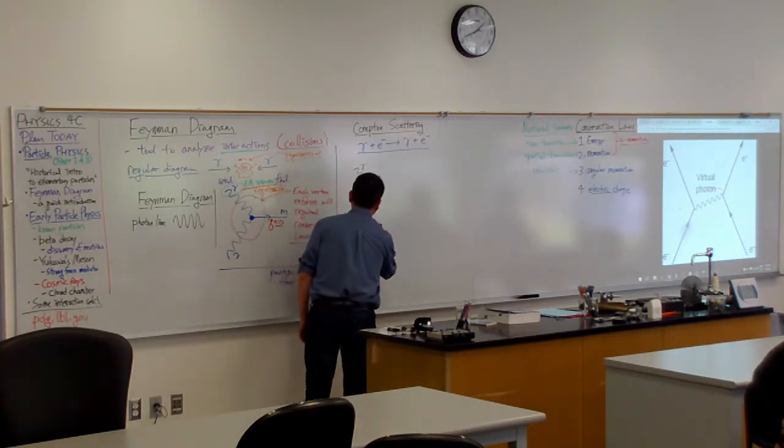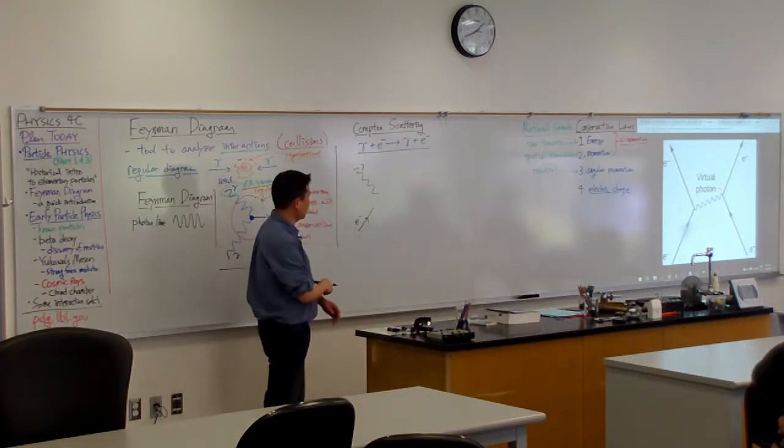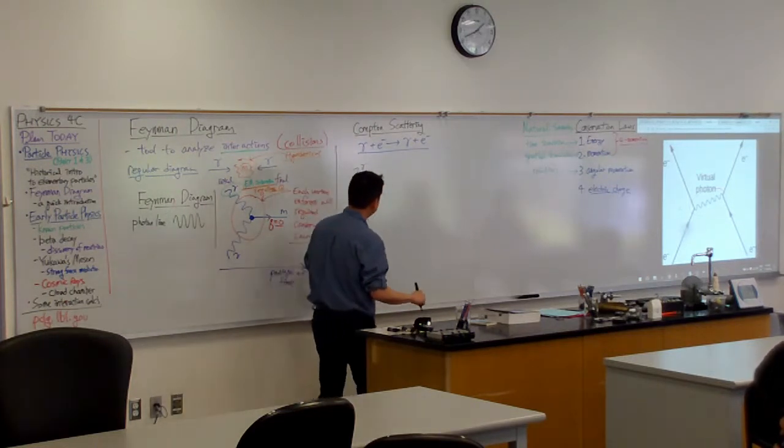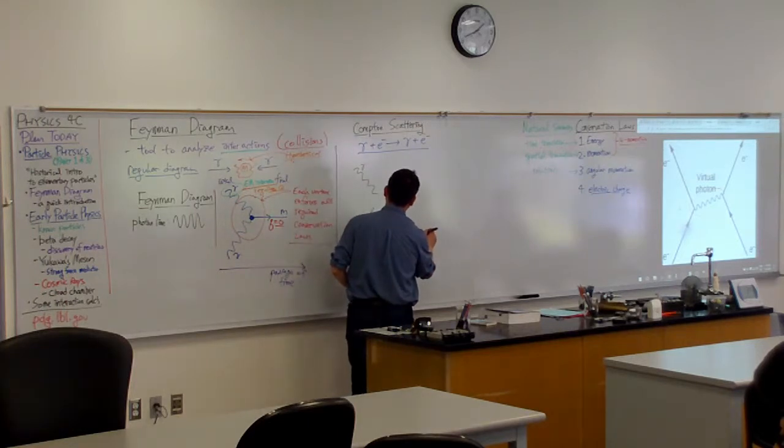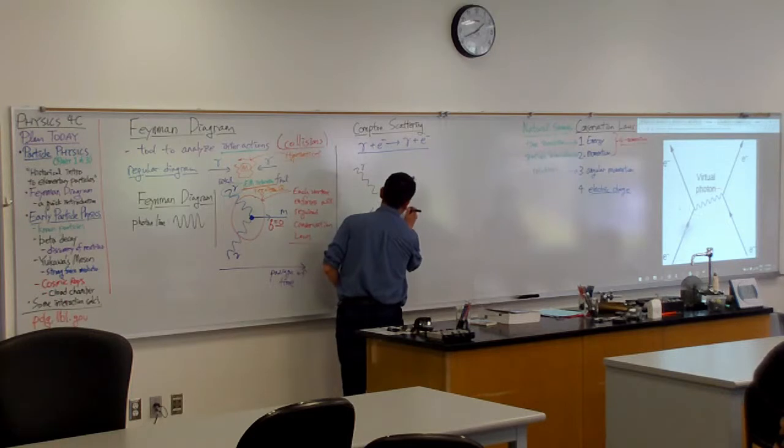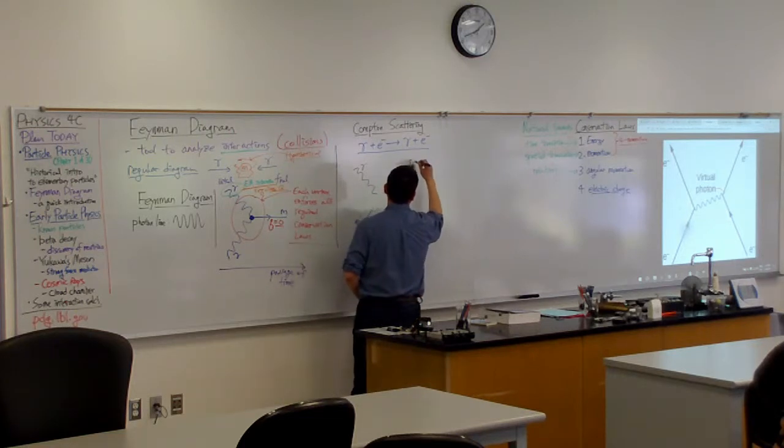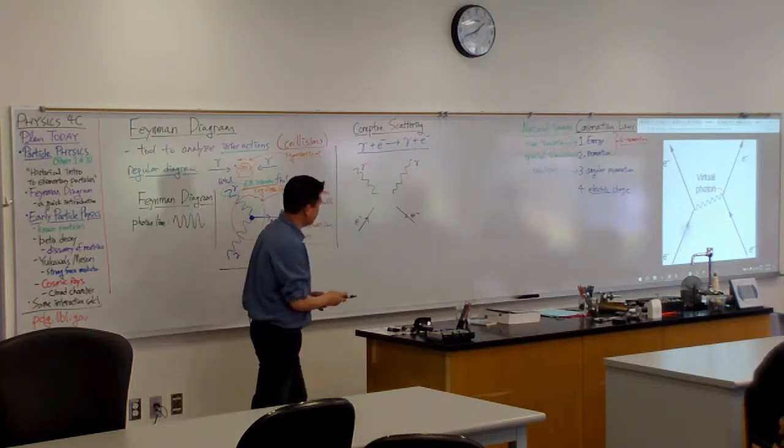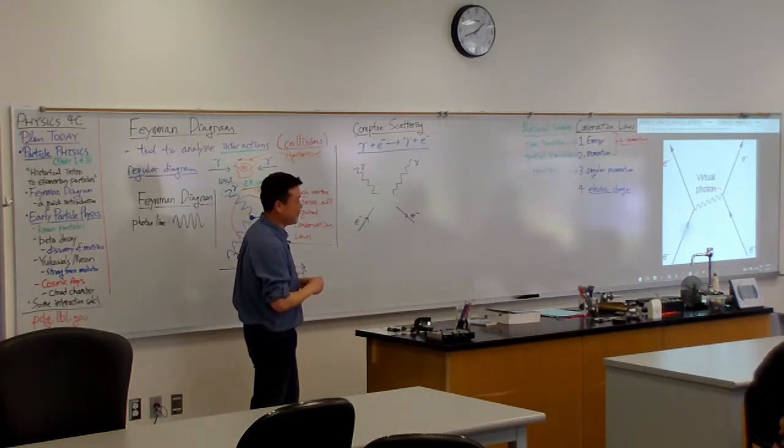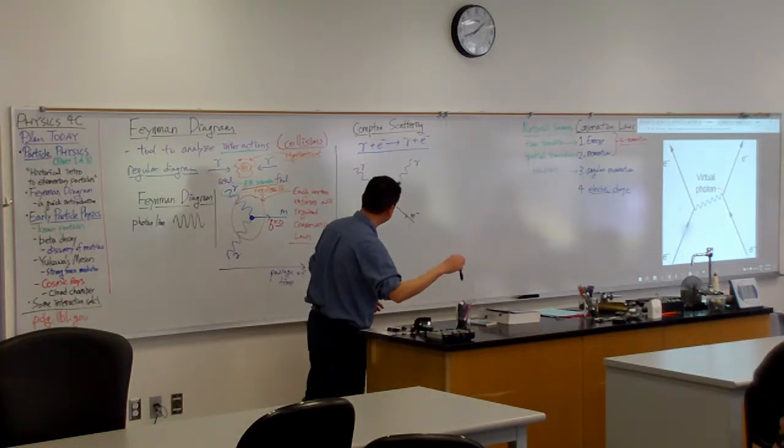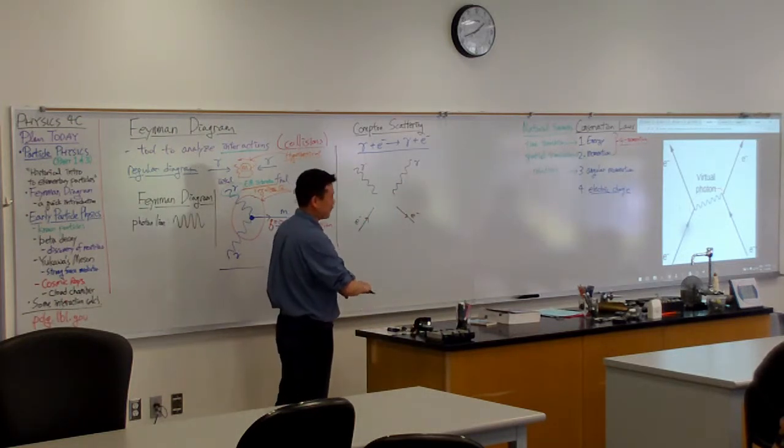And an electron coming in. This is the electron line. And at the end of the day, what we need to have is an electron going out and a photon going out. And what I want to do is, I want to come up with an argument why we can't draw it this way.